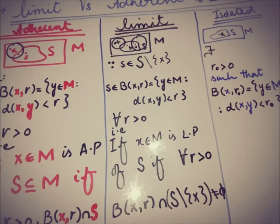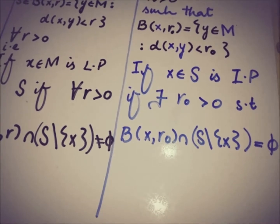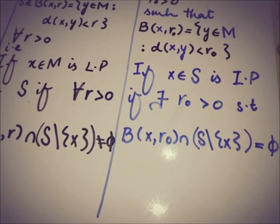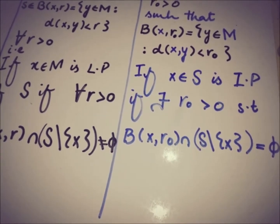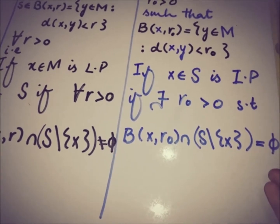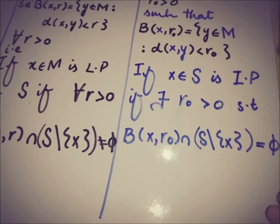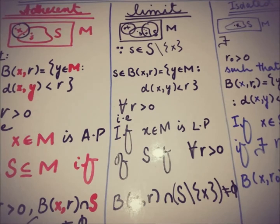Formally, x is an element of S and is an isolated point if there exists a real number r₀ greater than zero such that the open ball B(x, r₀) intersection with S minus {x} is empty — meaning the open ball contains no points from S other than x. This is the definition of an isolated point. That's all for now; please subscribe to the channel to watch more upcoming videos. We will meet in the next video — till then, take care, goodbye.